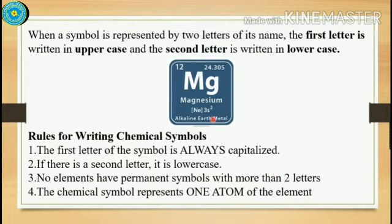When a symbol is represented by two letters of its name, the first letter is written in uppercase and the second letter is written in lowercase. Here you can see magnesium and the symbol is Mg, where the first letter is in uppercase and the second letter is in lowercase.